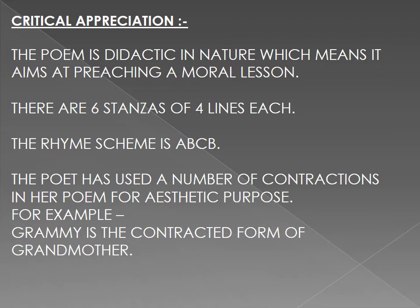The second and the fourth line rhyme with each other. In the poem, the poet uses a number of contractions for aesthetic purpose — to beautify the poem, create a rhythm, and balance the meter. Contractions means shortening a word. For example, 'Grammy' is the contracted form of 'grandmother.' While you read the poem, you will find other contracted words as well.